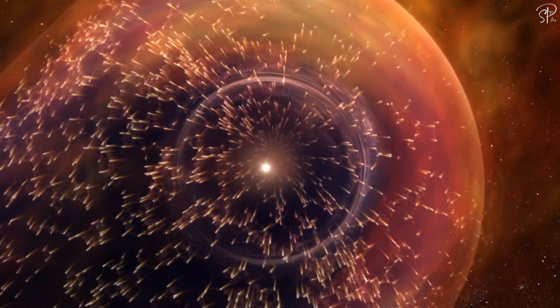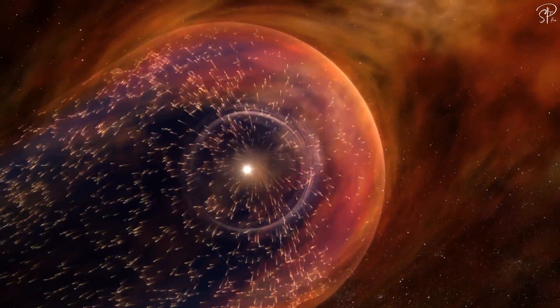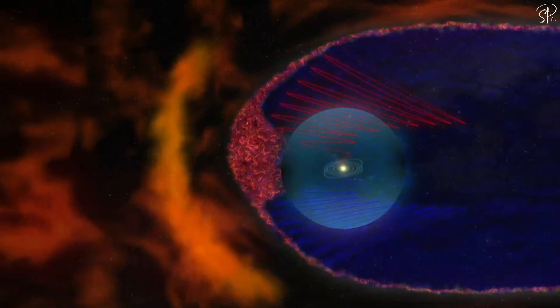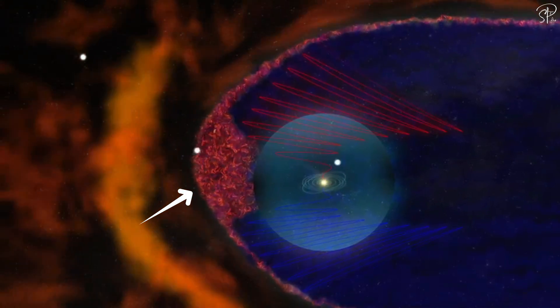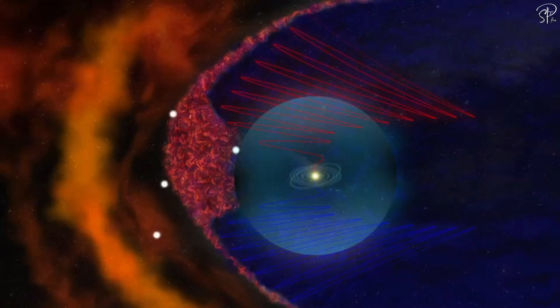But the density begins to increase at its boundary. It's because solar plasma collides with interstellar plasma here. Imagine two rivers colliding head-on at cosmic space. Of course, at the point of collision, the density increases. It's like a traffic jam, a chaos of particles.